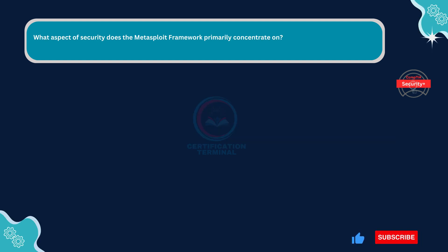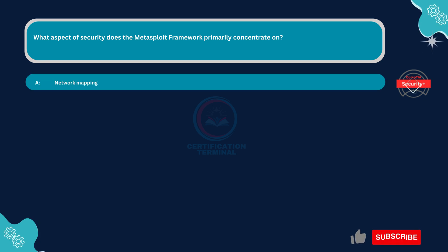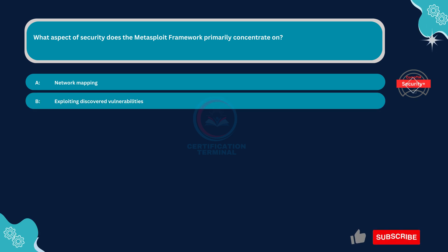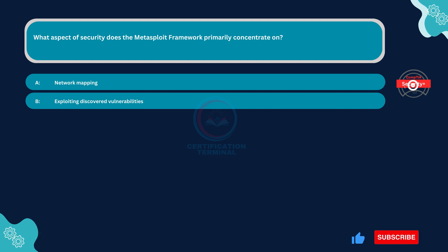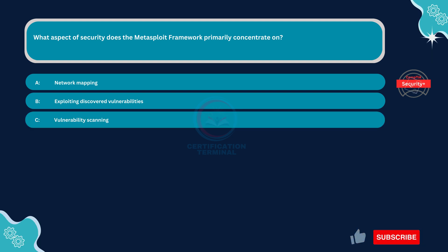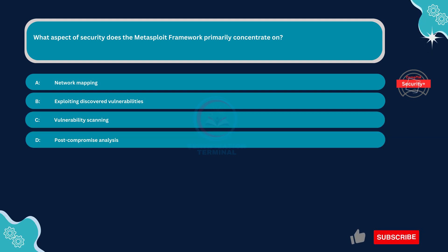What aspect of security does the Metasploit framework primarily concentrate on? Option A: Network mapping. Option B: Exploiting discovered vulnerabilities. Option C: Vulnerability scanning. Option D: Post-compromise analysis.